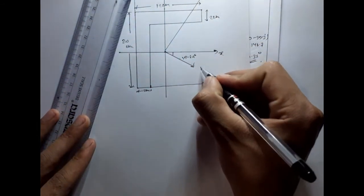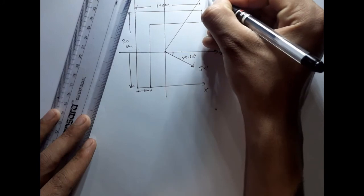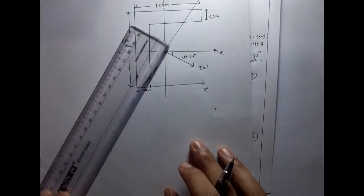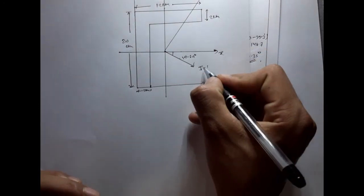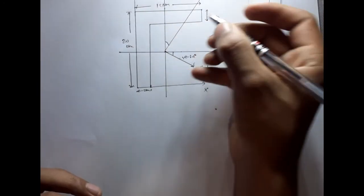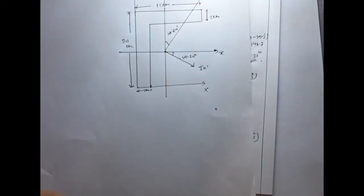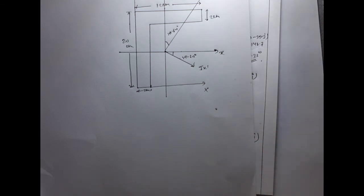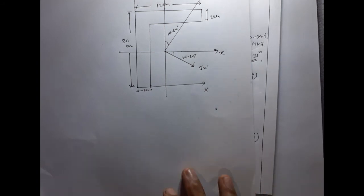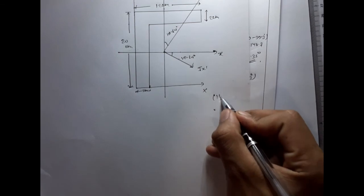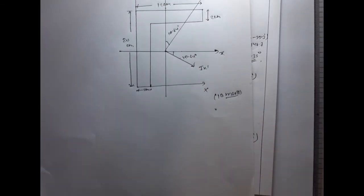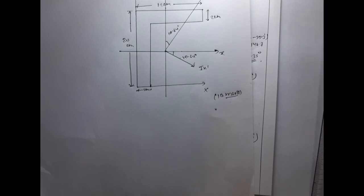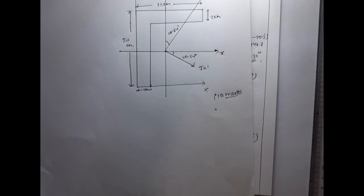To summarize: we found Imax and Iy values, and the x-dash y-dash principal axes are oriented at an angle of −19.64° from the original centroidal axes. This completes the direction and magnitude of the principal moments of inertia for this angle section. Please subscribe to the channel, and like, share, and comment. See you in the next video.